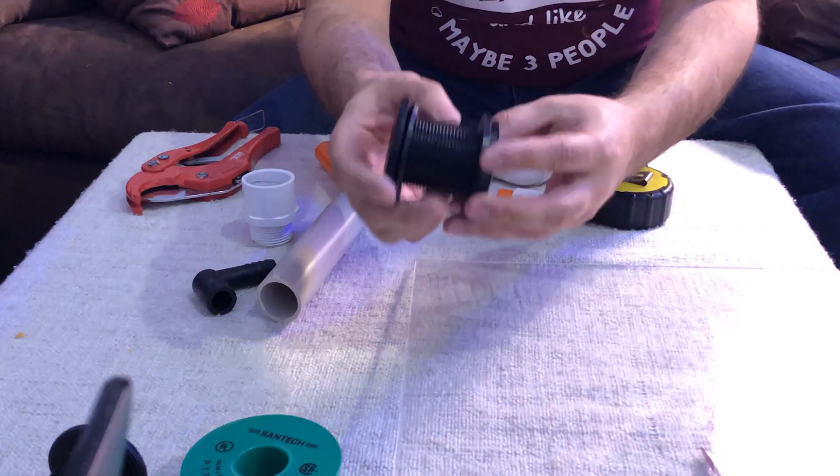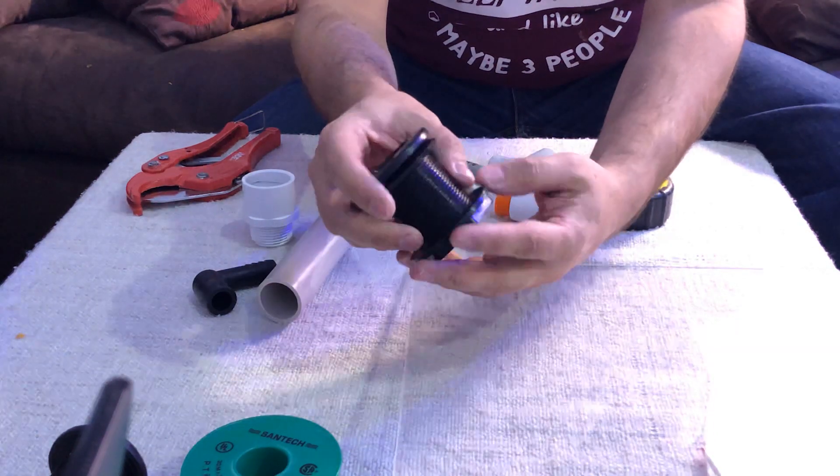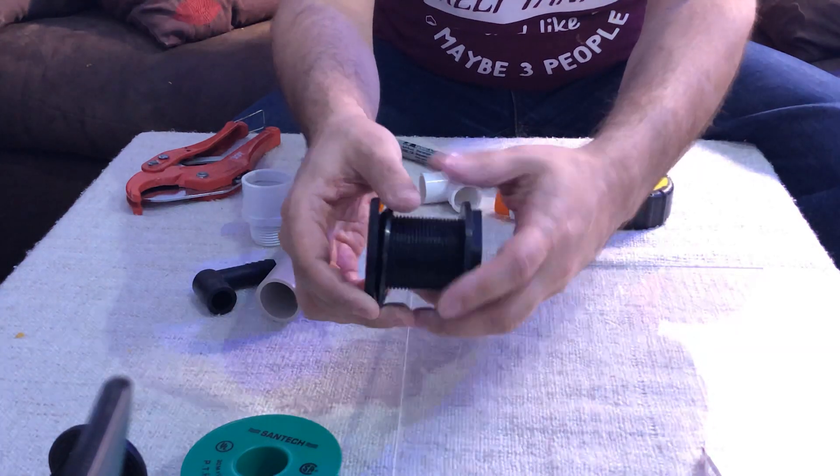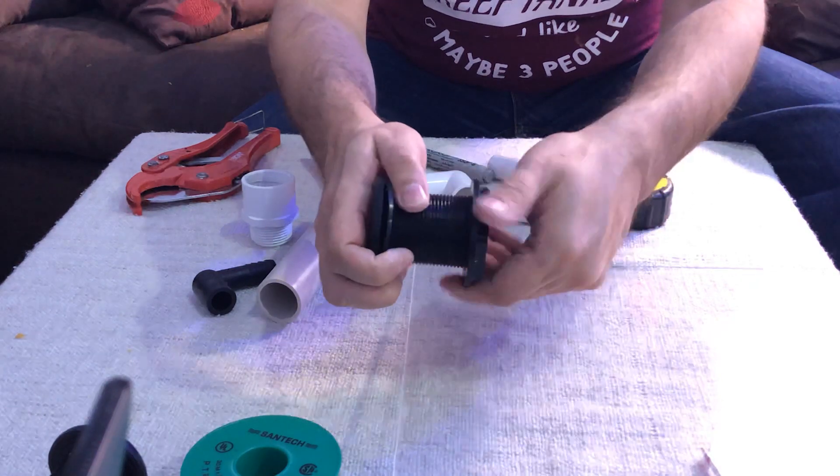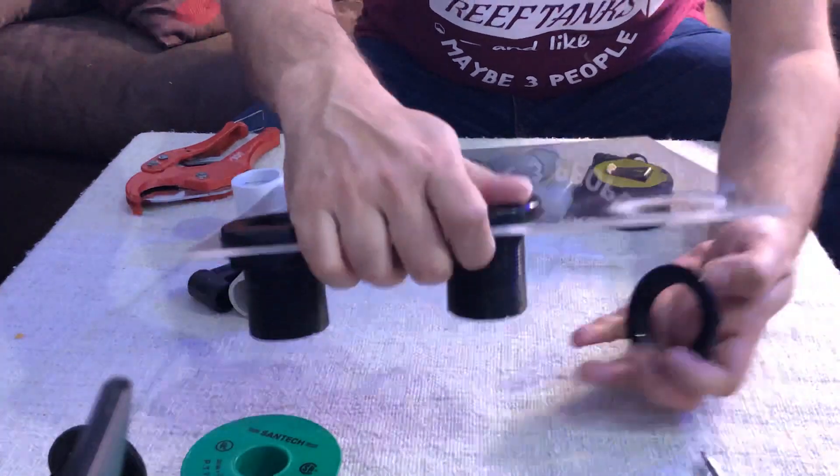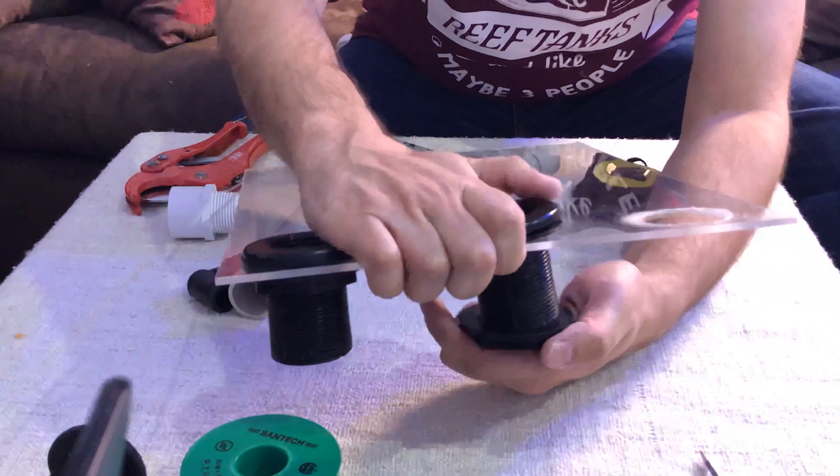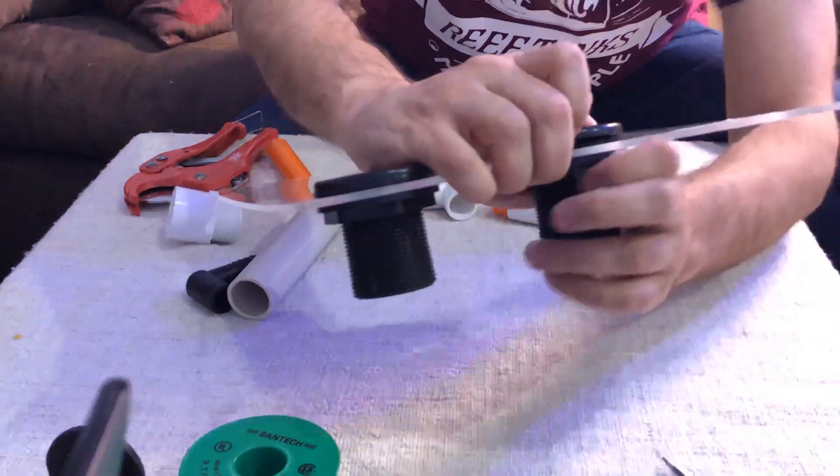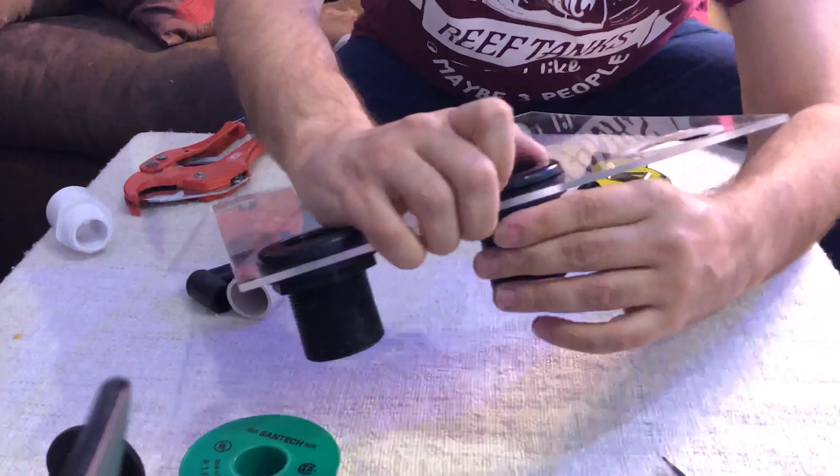The bulkhead is a fitting that will fit in the overflow holes and will allow the water to go down from the overflow to the sump without leaking. We put the head side and the gasket inside the tank, then we screw the nut from the outside until we have a tight fit.